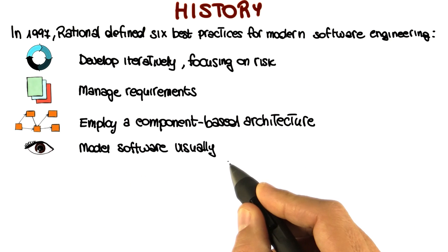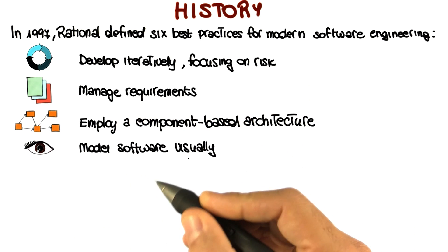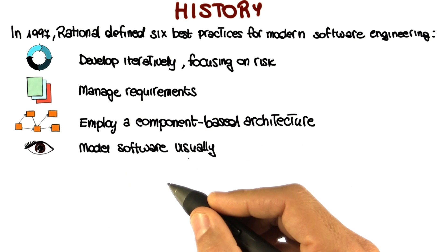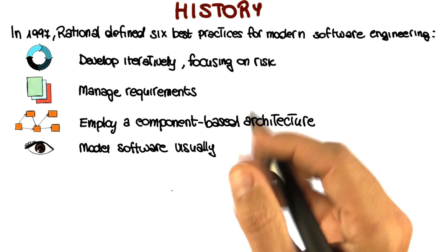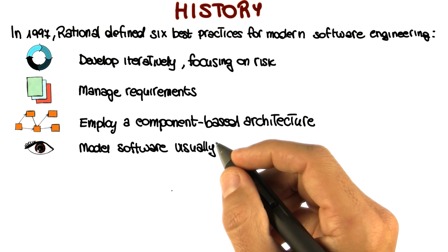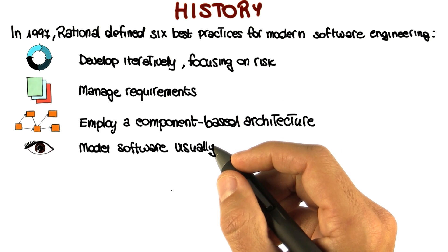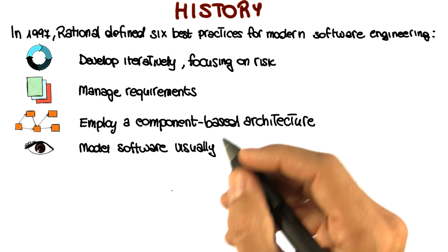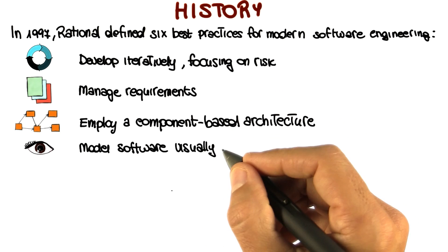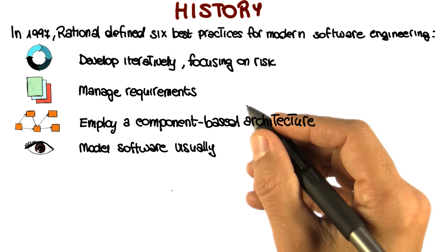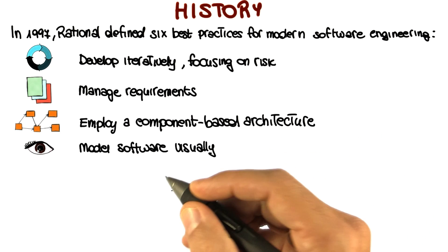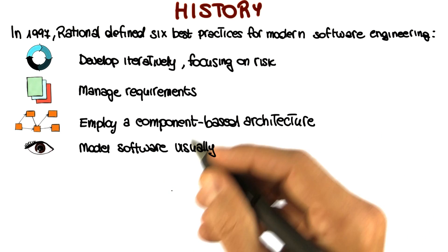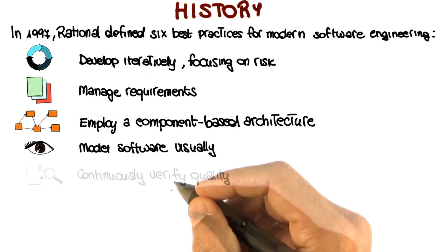Modeling software visually is another key aspect of the Rational Unified Process. The key concept here is to use visual diagrams — and in particular UML visual diagrams — in a very extensive way, so as to make artifacts easier to understand and agree upon among stakeholders.